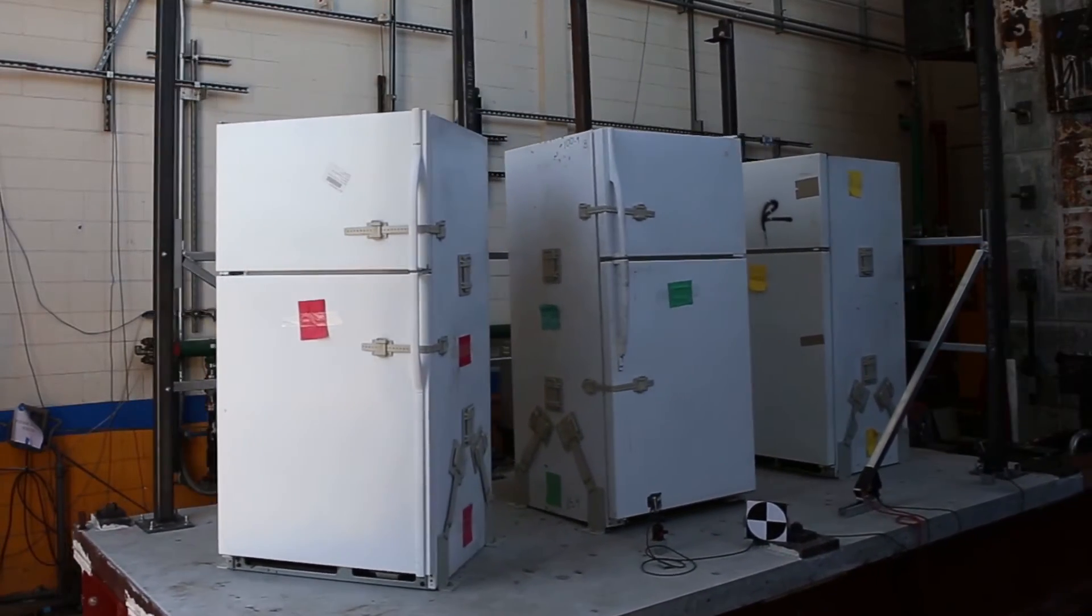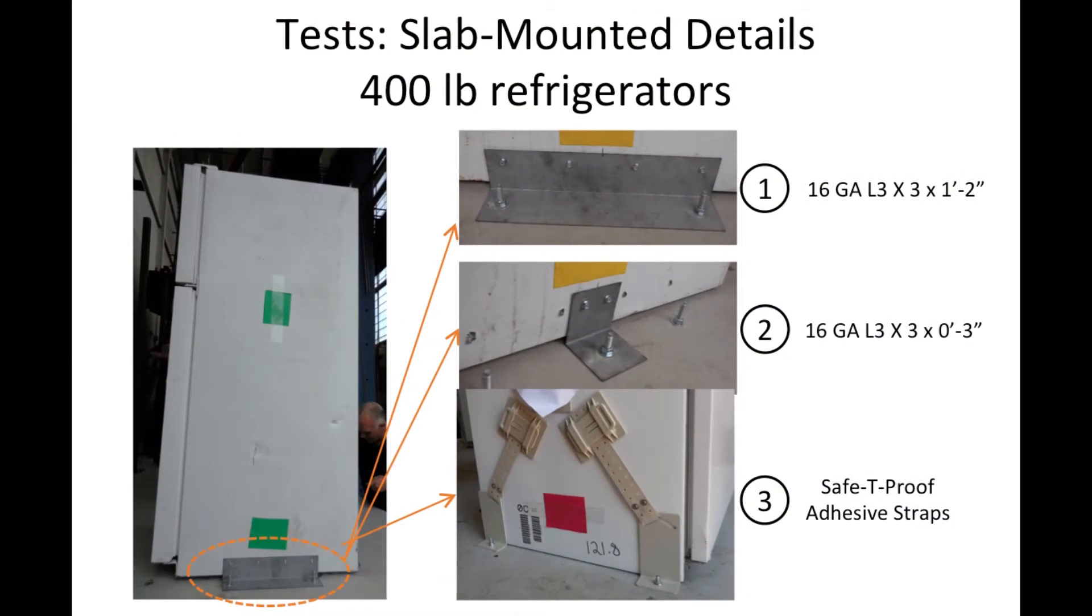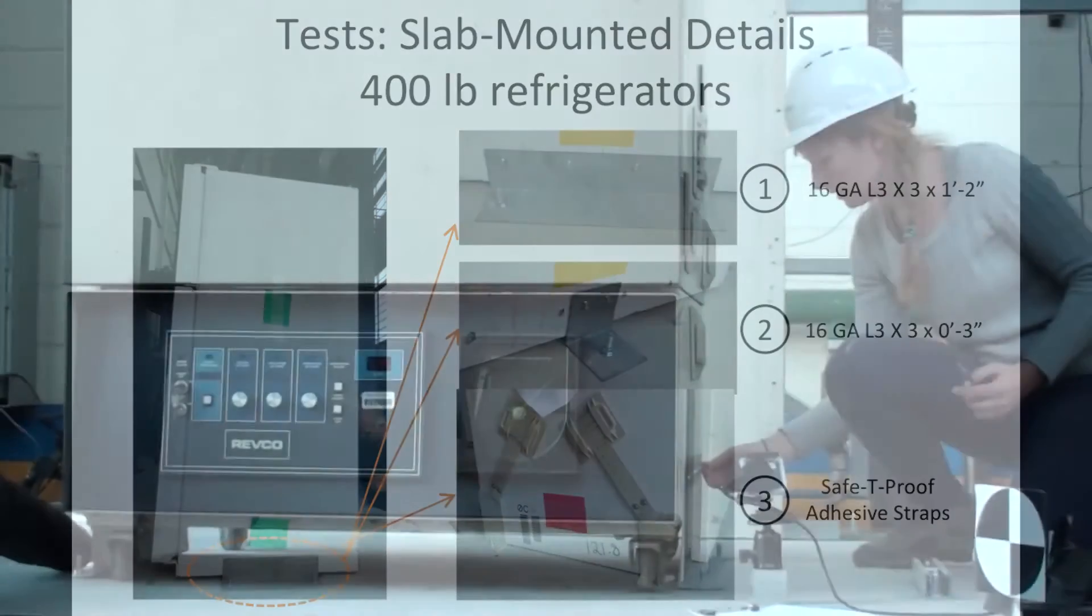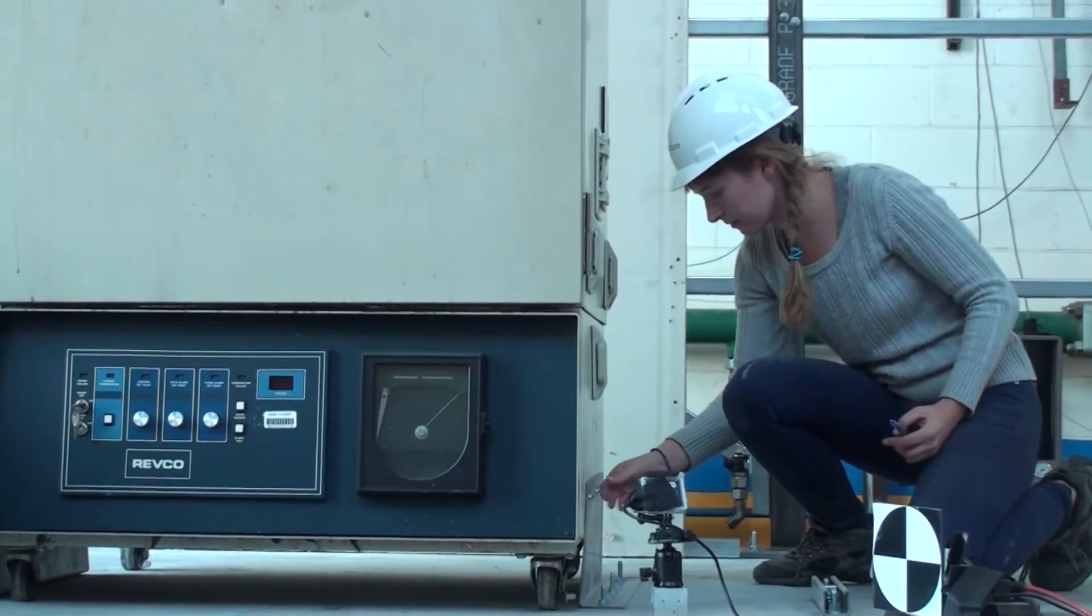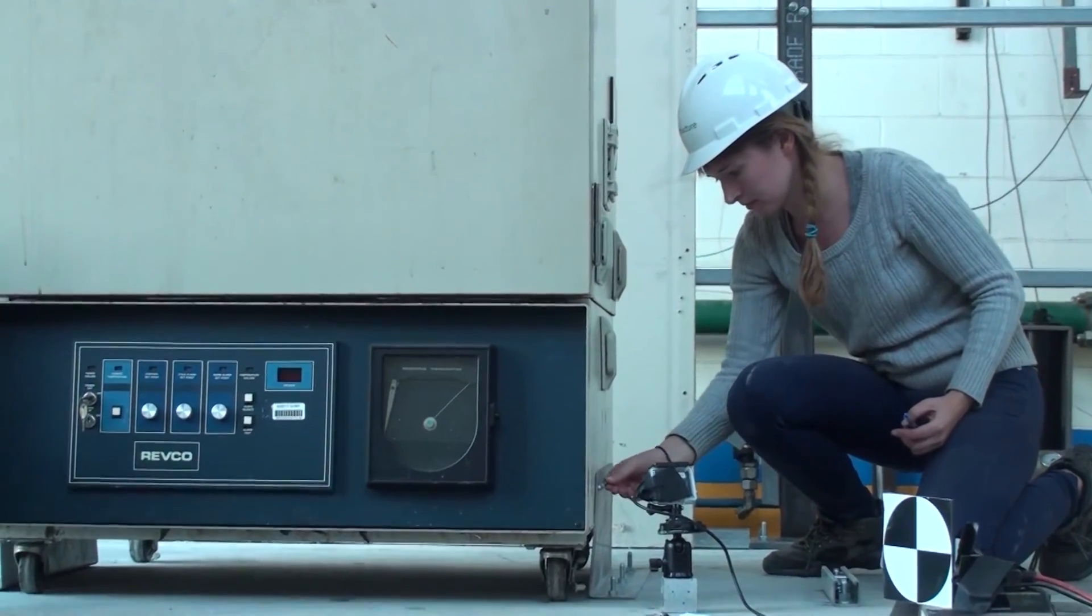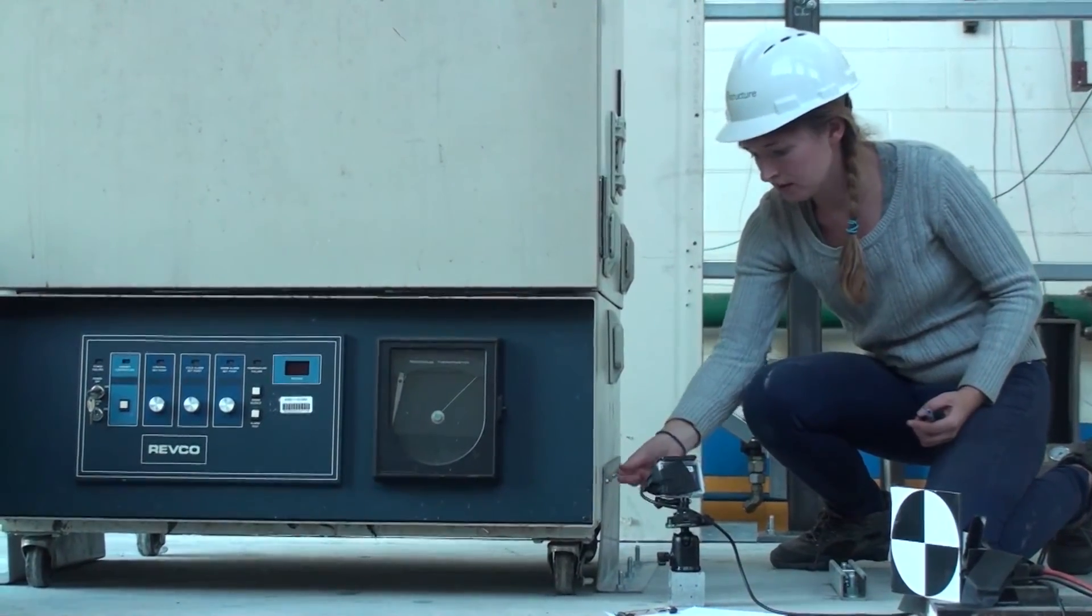Along the way, we learned that the effectiveness of the installations is related to a number of quality control or installation measures. For example, the thickness or the gauge of the refrigerators and freezers is important if we use screws to make connections to them. If we use adhesives, the surface preparation is essential to good performance.